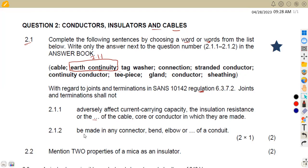Then we are on the other part: to be made in any connector, bend, elbow, or of a conduit. So which part of the conduit in this case? We are given these are the connections that we have, the other components that we have, like we've got the connector, bend, elbow, or what? So the other part that we can have is a tee-piece in this case, or of a conduit. So this one is a tee-piece, which is 2.1.2.